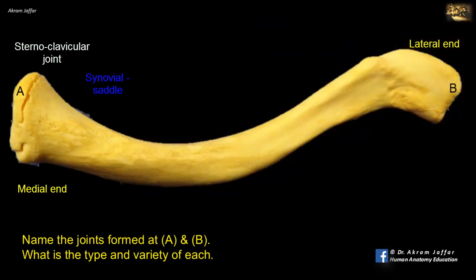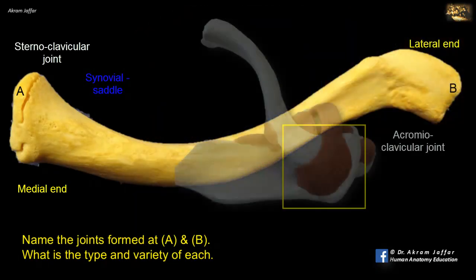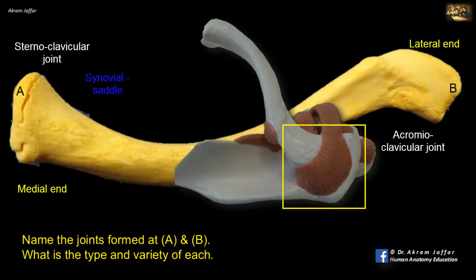The joint B is the acromioclavicular joint. This joint is a plane type of synovial joint between the acromial end of the clavicle, or the lateral end of the clavicle, and the acromion of the scapula. Again, the articular surfaces are covered with fibrocartilage instead of hyaline cartilage, and they are separated by an incomplete wedge-shaped articular disc.